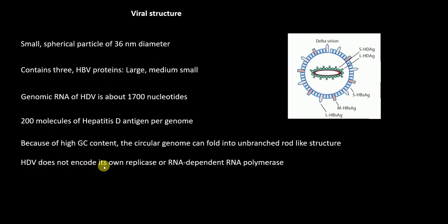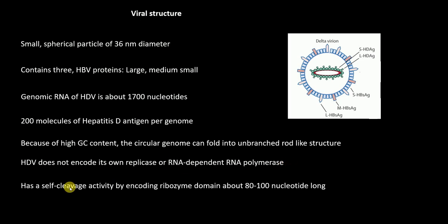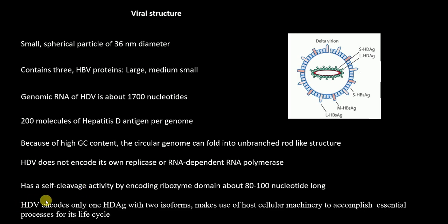An important point about Hepatitis D virus is that it does not encode its own replicase or RNA-dependent RNA polymerase; therefore it utilizes host RNA polymerases. Hepatitis D virus also has self-cleavage activity because it encodes a ribozyme domain about 80 to 100 nucleotides long. Finally, HDV encodes only one protein — Hepatitis D antigen — which has two isoforms: large HDAg and small HDAg. This virus makes use of cellular machinery to complete its essential life cycle processes.